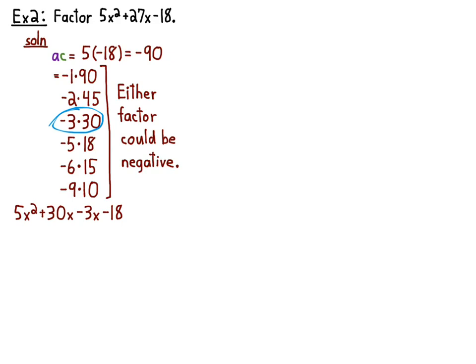So those will be the coefficients of my two middle terms. I'll have a negative 3x and I'll have a 30x. And which one do I write first? Well, 5 divides 30, so I wrote the 30 with the 5 because that's most likely to work out. And then the 3 with the 18. Those share a factor of 18. Actually, negative 18. Negative 3 with the negative 18.